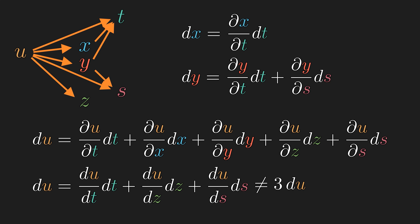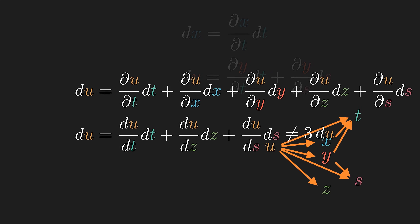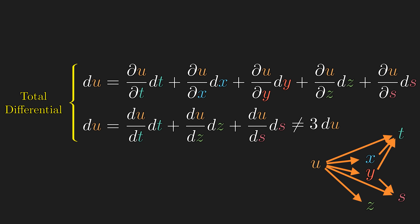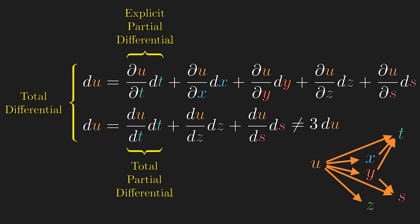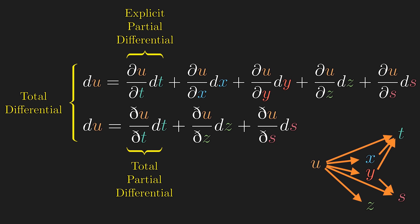du/dz is the same as the partial derivative, and du/ds gets two contributions. So the differential can be written as a sum of all the total derivatives with respect to all the terminal variables times their differentials. As a word of warning, if we treat total derivative like a fraction, we end up getting du equals 3 times du — but this does tell us there are three degrees of freedom in the dependence chain. The differential du, if we want to be pedantic, can be called the total differential. We might be interested in how much u changes with respect to t while holding other variables constant, which is the partial differential. We then have the problem of differentiating between the explicit partial differential and the total partial differential.